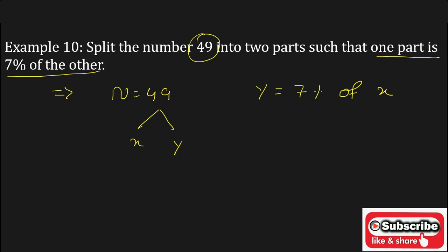The formulas to find the value of x and y are: x equals 100 upon 100 plus p into n, whereas y equals p upon 100 plus p into n.